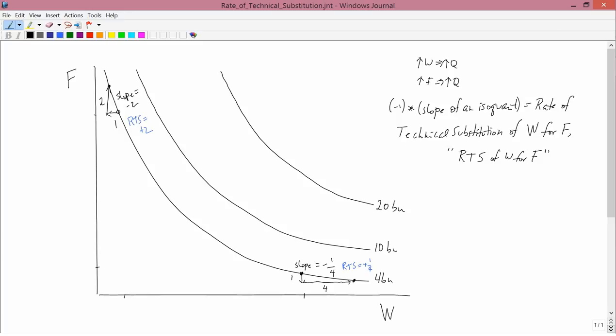So what you see is as you go from left to right, the rate of technical substitution starts at something like plus 2 and ends up at something like plus 1 quarter. So as you go from left to right, we have diminishing, you could also say decreasing, rate of technical substitution.